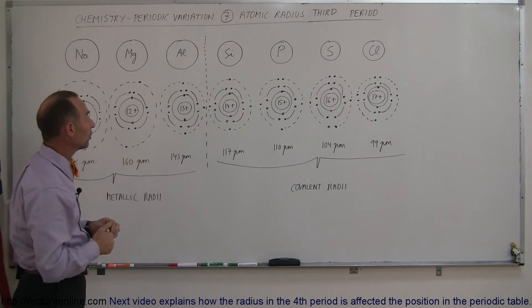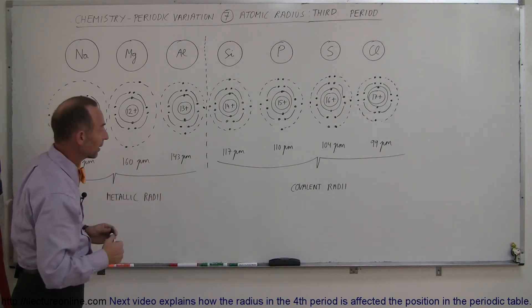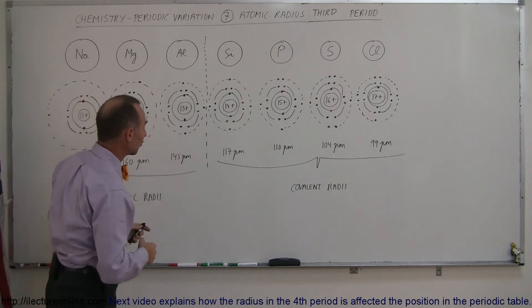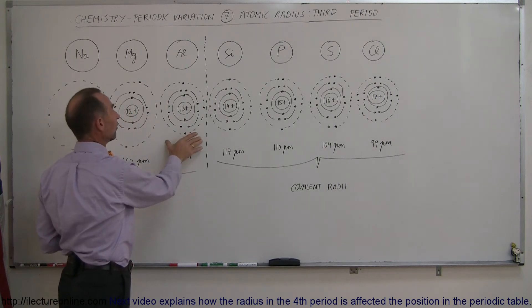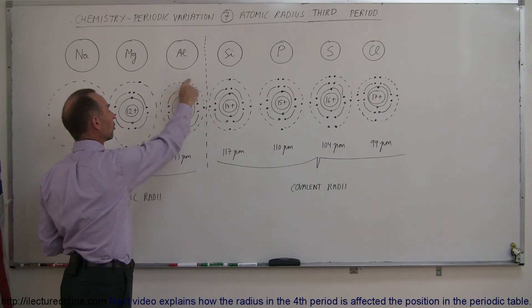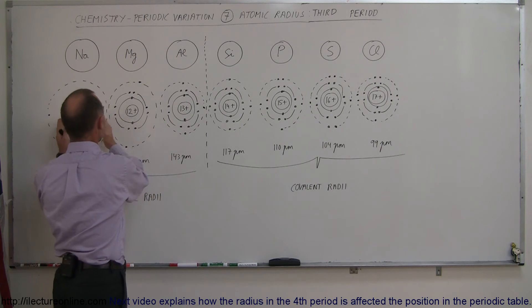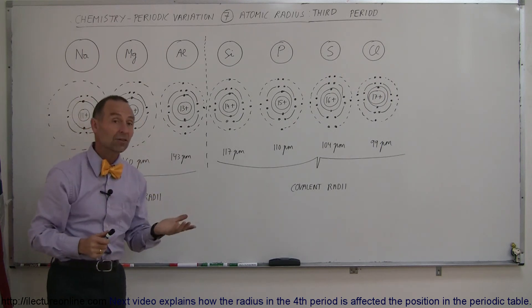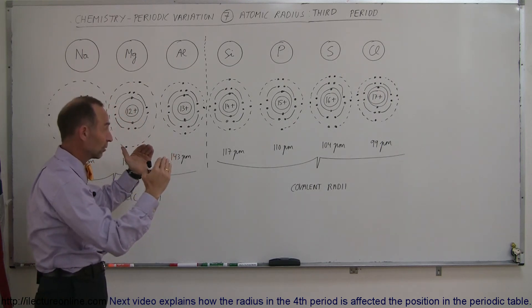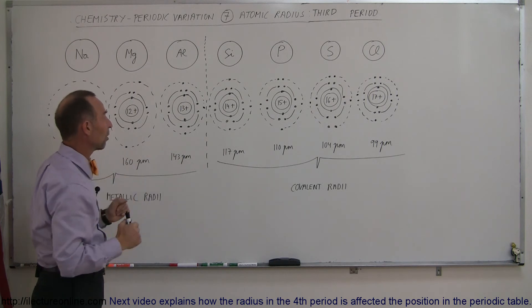Moving over then to aluminum which is the first element on the right side of the transition elements, so this is the first representative element in period three, we find there are three positive charges, three electrons. Again the same effect - the screening of the ten electrons is the same as it was for sodium and magnesium. Therefore the force of attraction is a little bit more and so the atom gets smaller.